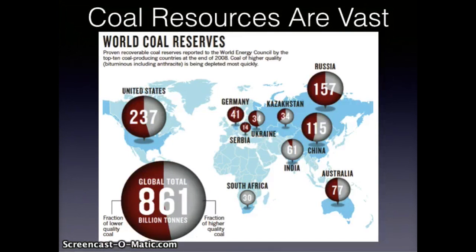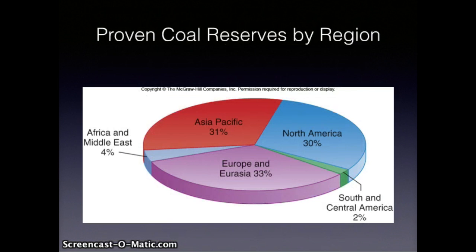World coal deposits are enormous — 10 times greater than conventional oil and gas resources combined. Coal seams can be 100 meters thick and extend across tens of thousands of square kilometers. The total resource is estimated to be 10 trillion metric tons. If all this coal could be extracted and we could find environmentally benign ways to use it, this would amount to several thousand years of supply. Almost all the world's coal is in North America, Europe, and Asia, and just three countries — the United States, Russia, and China — account for two-thirds of all proven reserves.